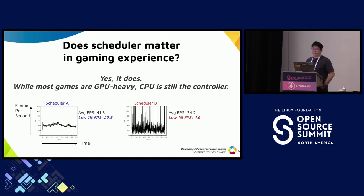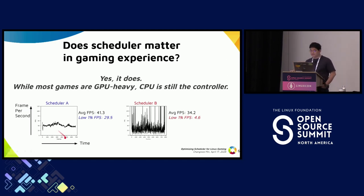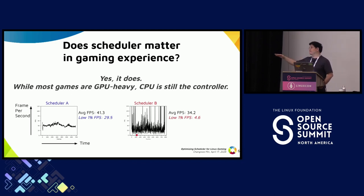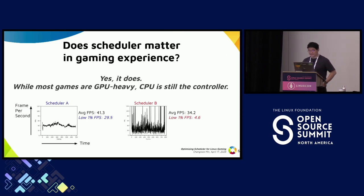This graph shows the same game run with two different schedulers, presenting frames per second over time. Scheduler A shows relatively consistent frame rate — the gaming experience is relatively good. But with Scheduler B, at some point the frame rate shoots up to 120, and then by the very next moment drops down to 5 FPS. The gaming experience is really poor because the user suffers from micro-pauses — your eyes are really itching. So if you ask: does the scheduler matter in gaming experience? Yes, it seriously does.